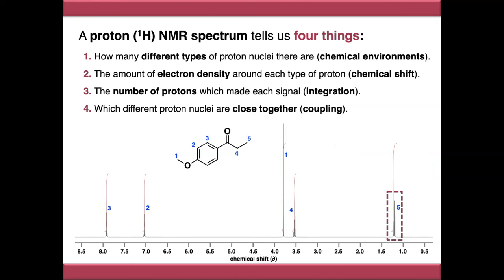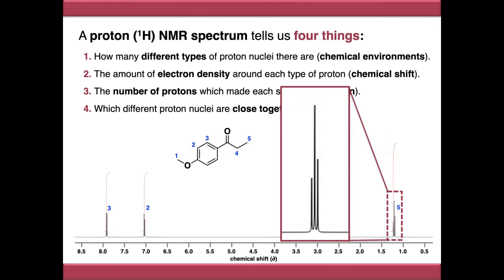To use another example and look at position five if we zoom in on this we can see that it's a triplet, it's made up of three peaks and this is because the protons at position five are coupling to the two protons at position four so your singlet splits into a doublet and then a triplet.